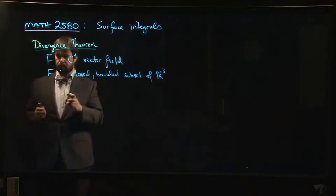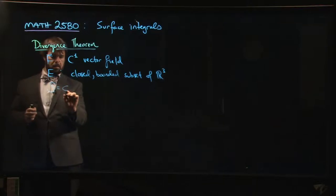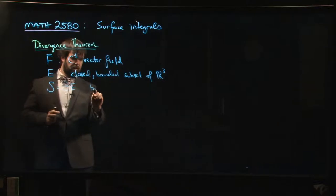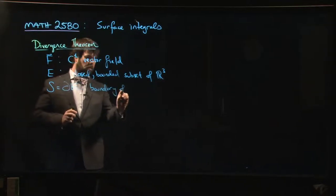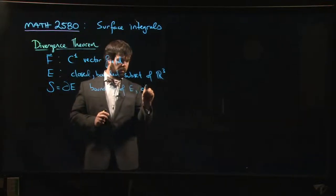Okay, so the other ingredient is S. S is going to be the boundary of E. So this is the boundary of E, and it's got to have this so-called outward orientation.